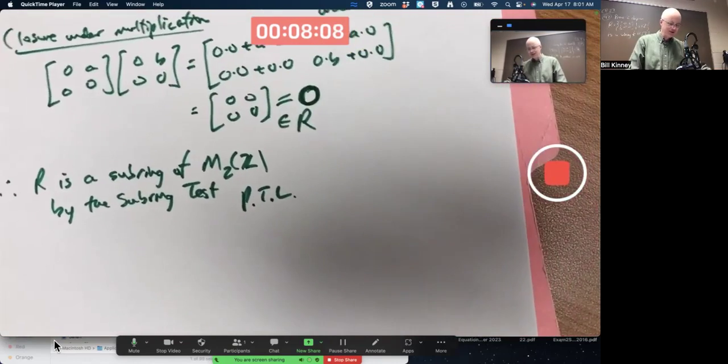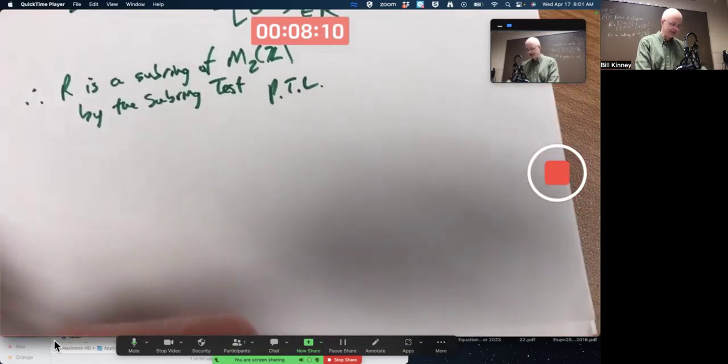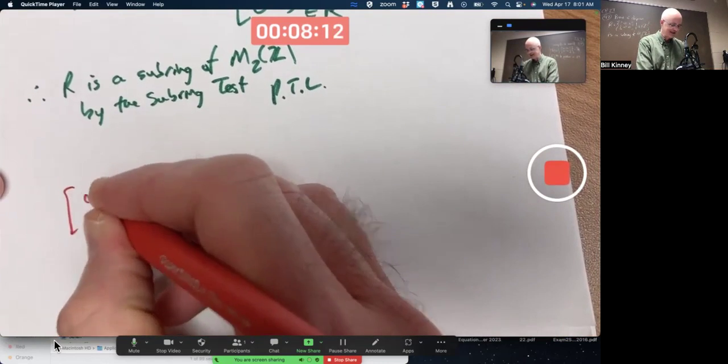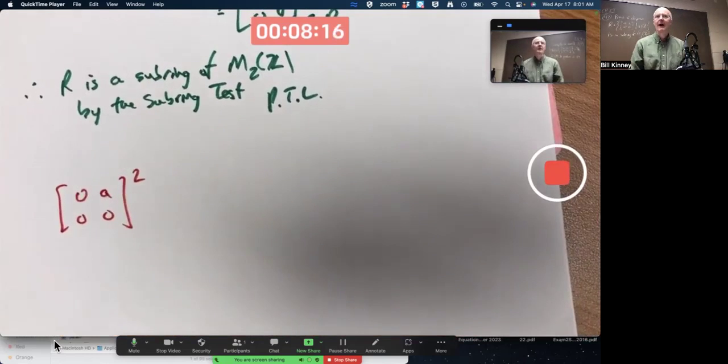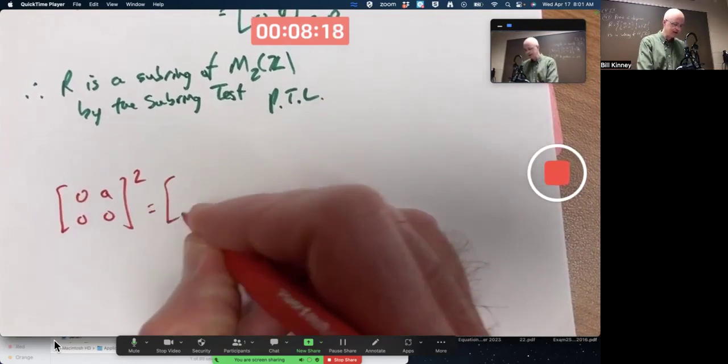There's, in fact, that also means if you square any element of this subring, or cube it, or raise it to the fourth power, or whatever, you're going to get the zero matrix as well.